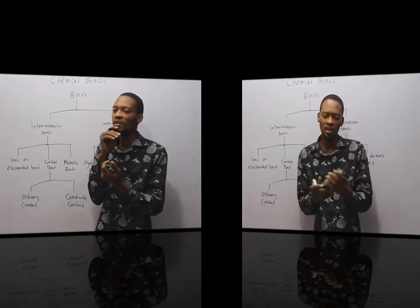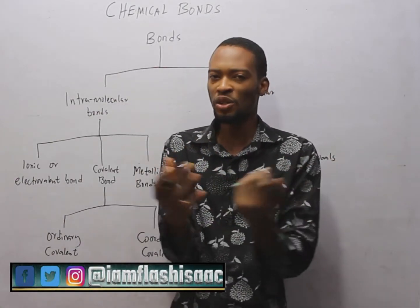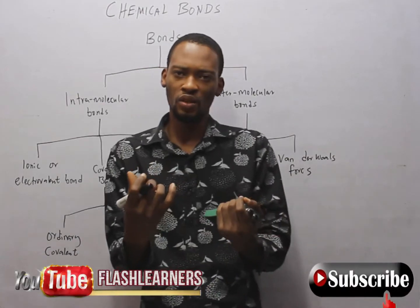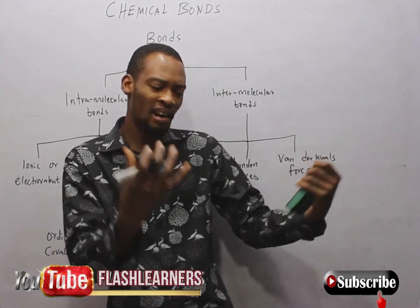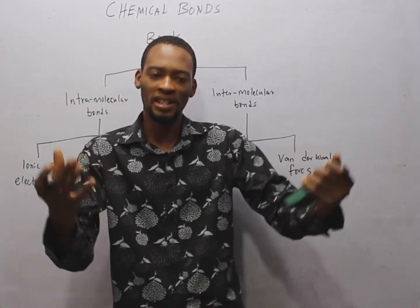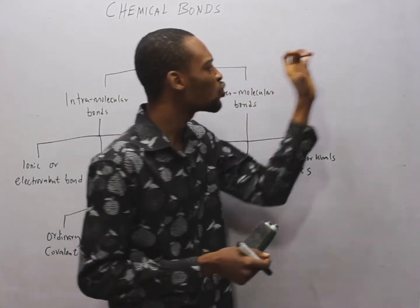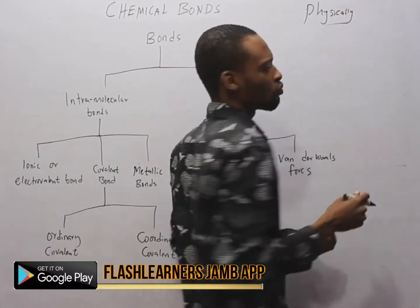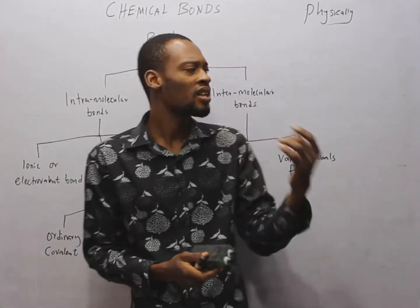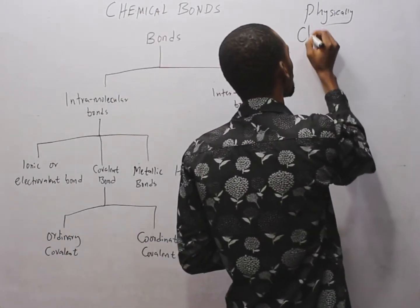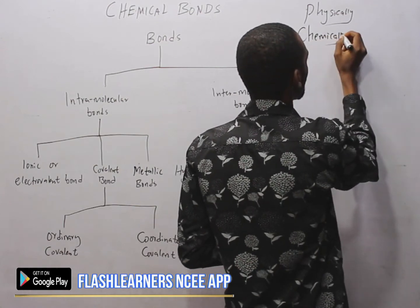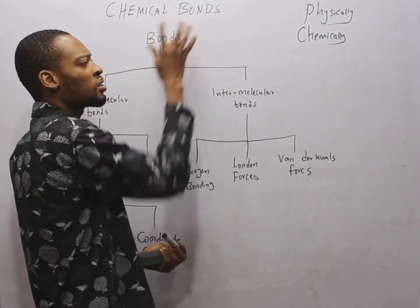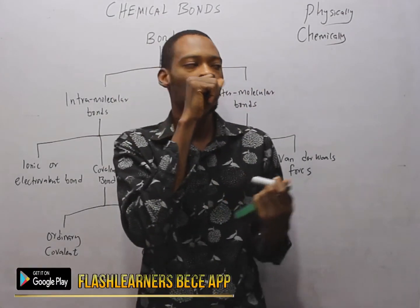Chemical bonds are the attractive forces that hold two atoms or elements together. Remember we have elements, compounds, and mixtures. An element is a substance which cannot be broken down into simpler form by an ordinary chemical process. A mixture contains two or more elements combined physically, while compounds contain two or more elements chemically combined.